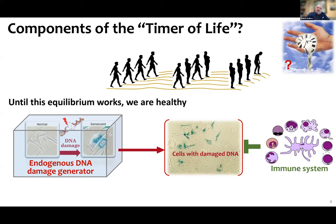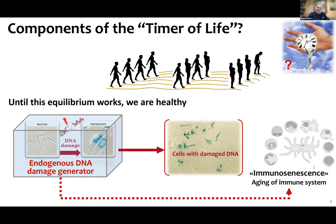Senescent cells make themselves targets for immune response, and the immune system quite effectively eliminates them. However, with time, the immune system stops being effective and immunosenescence develops.